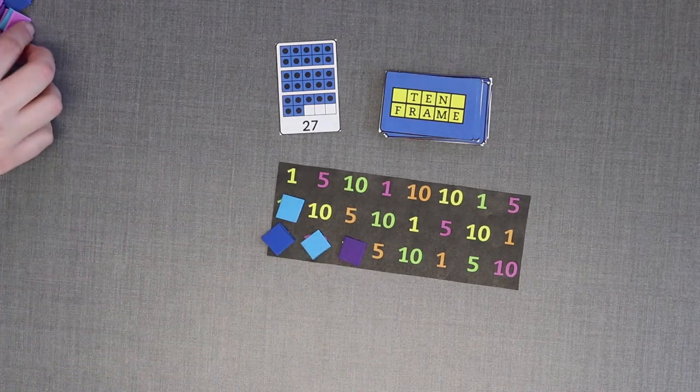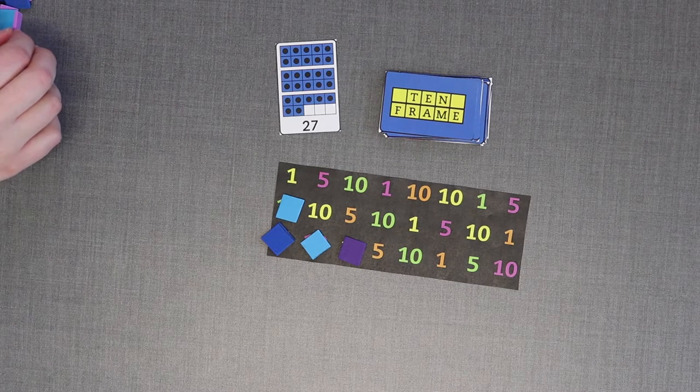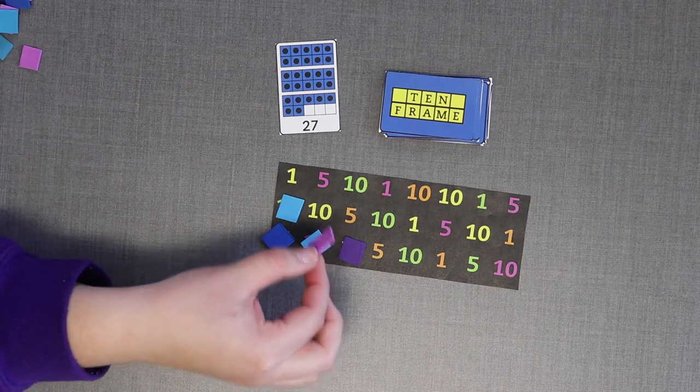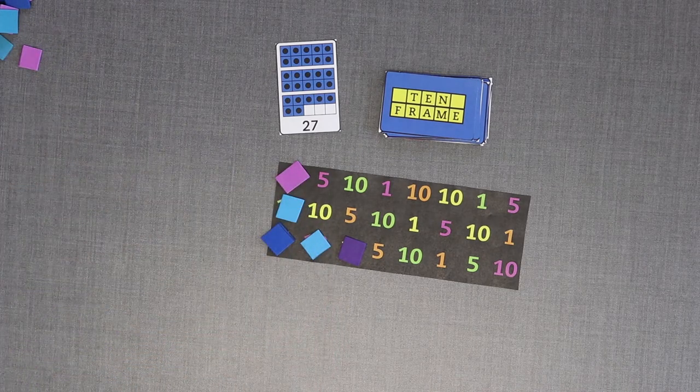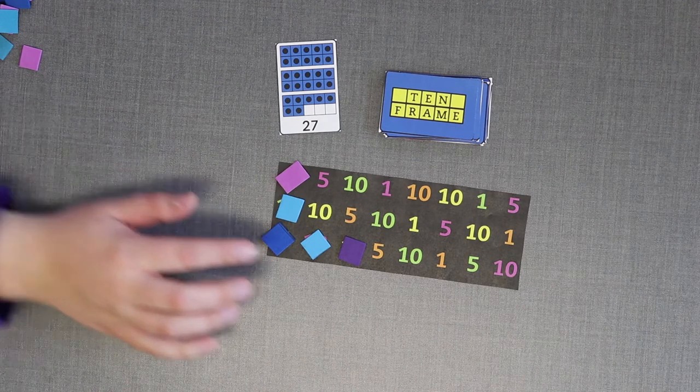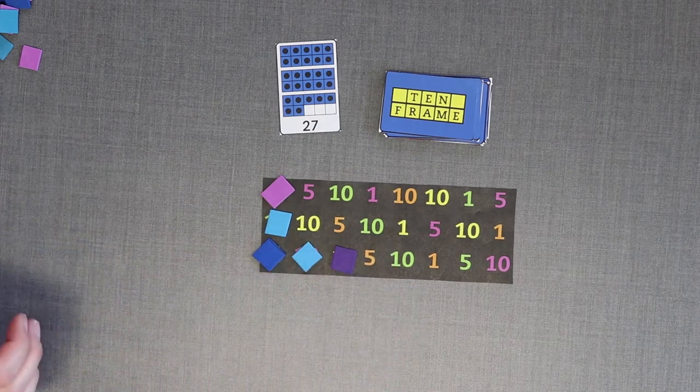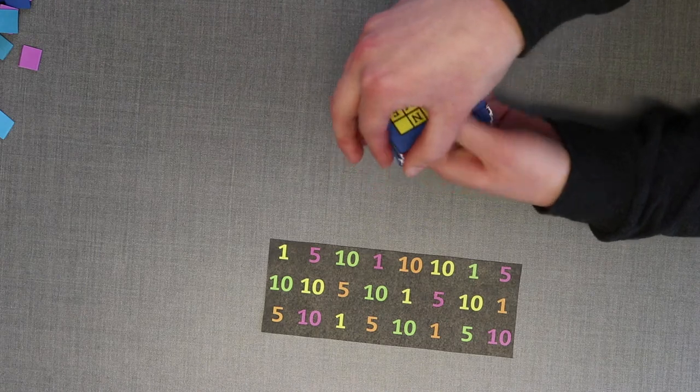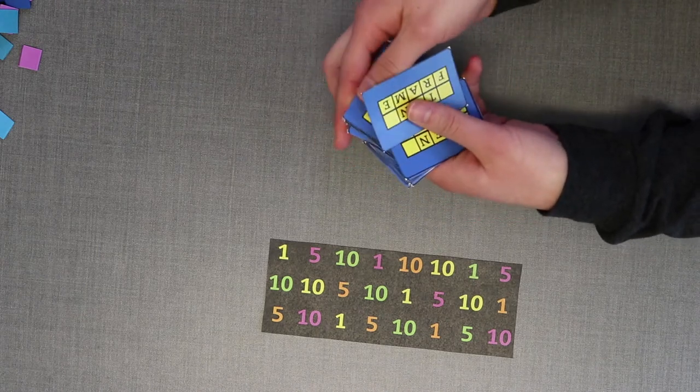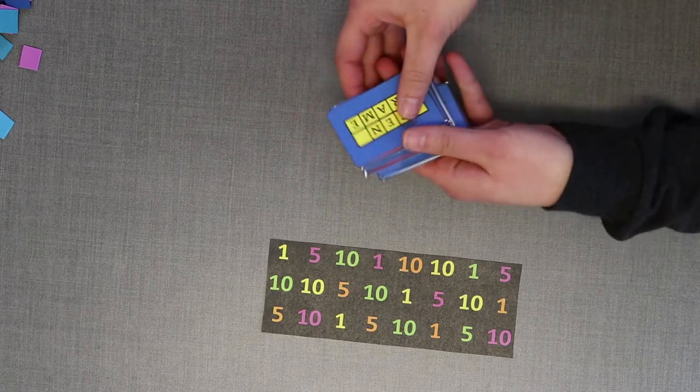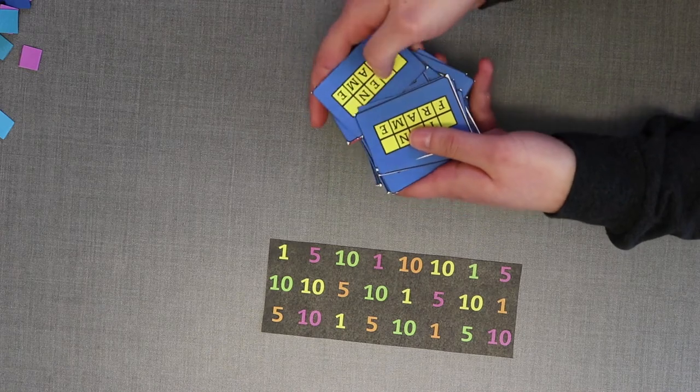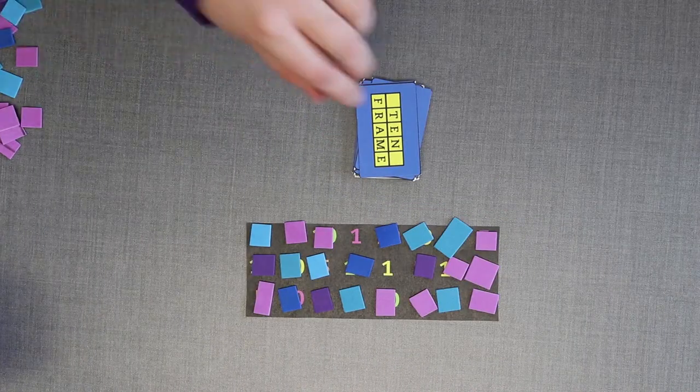As long as you can cover one number on the game board, you can play. Place your card face up in the discard pile. Your turn is over. Play moves to the left. If you run out of cards, shuffle the cards in the discard pile and keep playing. The first person to black out their game board or cover up all the numbers on their game board wins the game.